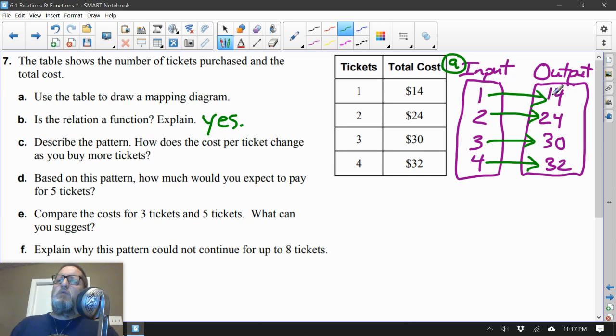The cost per ticket. Well, one ticket costs $14. I'm just going to keep track of that right here. If you buy two tickets, it's $24. So if two tickets are $24, that means each one of those tickets would cost $12. Do you see what I did there? 24 divided by 2 is 12. So each ticket costs $12. 14 divided by 1 is 14, 24 divided by 2 is 12. What's 30 divided by 3? Well, that's 10. 32 divided by 4? 8.